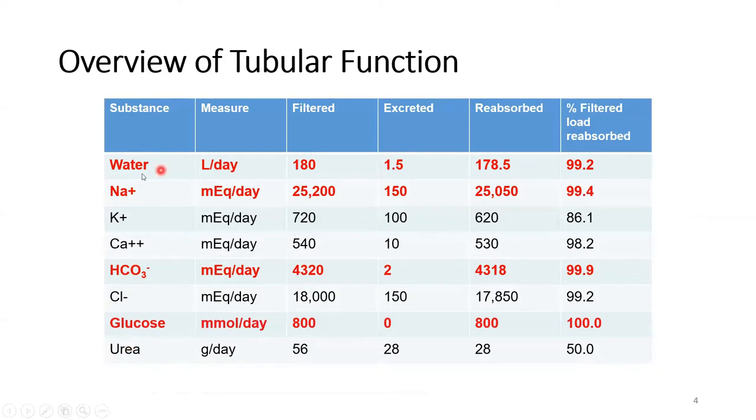This is an overview of the kind of work that the kidney does. The red ones in particular are crucially important. Water in liters per day: 180 liters filtered, only 1.5 excreted, and the rest - 99.2 percent - is reabsorbed. Sodium's reabsorption rate is also extremely high at 99.4 percent. Bicarbonate is 99.9 percent. Glucose is 100 percent.